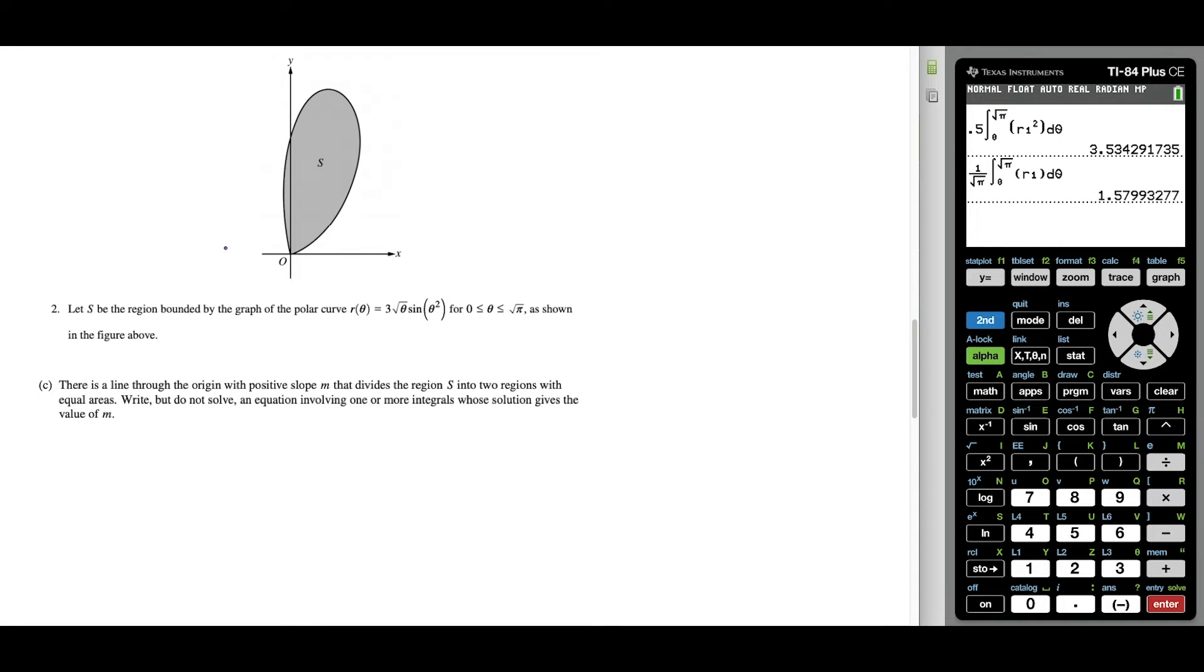In question part c, we're told that there's a line going through the origin, and it has positive slope m. And this line cuts region S into two sections with equal area. And our goal here is to come up with an equation involving one or more integrals, where the solution gives you the value of m the slope of this line. Well, a few things that we need to know is that if it's going through the origin, the equation is just y equals m x, where m represents the slope of this line. And you could have certain formulas memorized for this question. But if you want to know the concept behind what is the value of m,